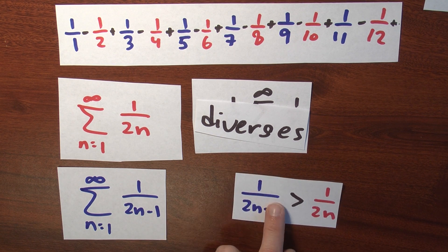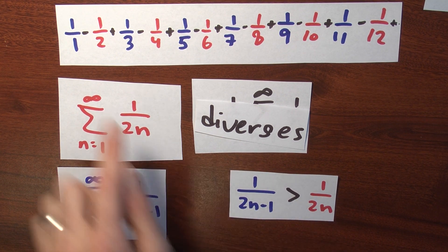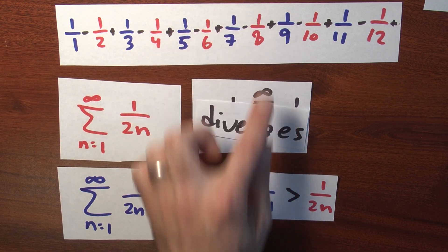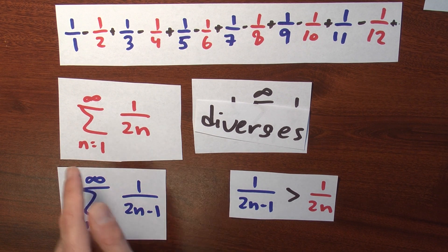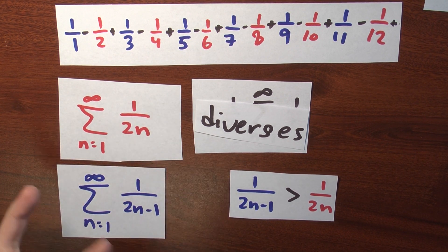Well, the trouble is that 1 over 2n minus 1 is even bigger than 1 over 2n. All right, 1 over 1 is bigger than a half. A third is bigger than a fourth. A fifth is bigger than a sixth. A seventh is bigger than an eighth. So if this series diverges, then this series diverges as well.